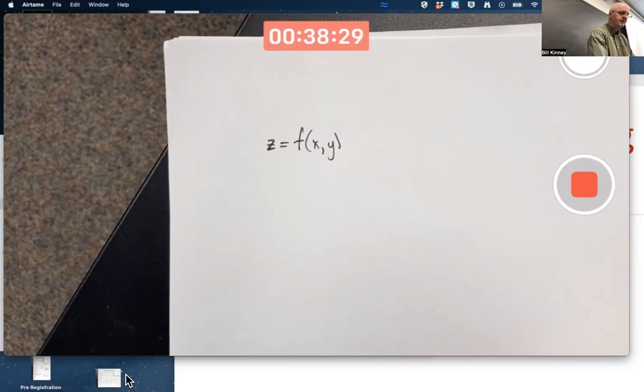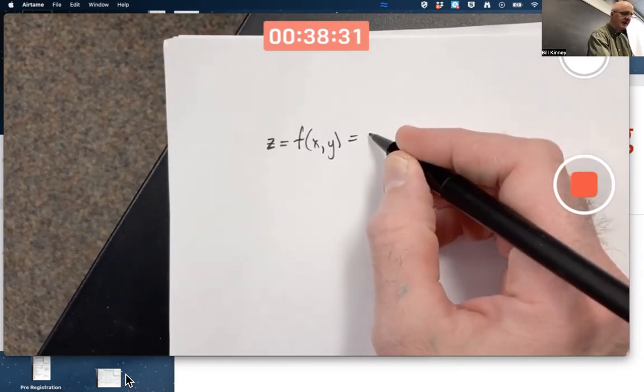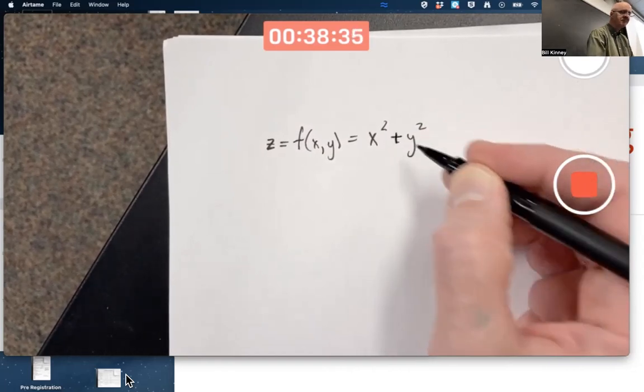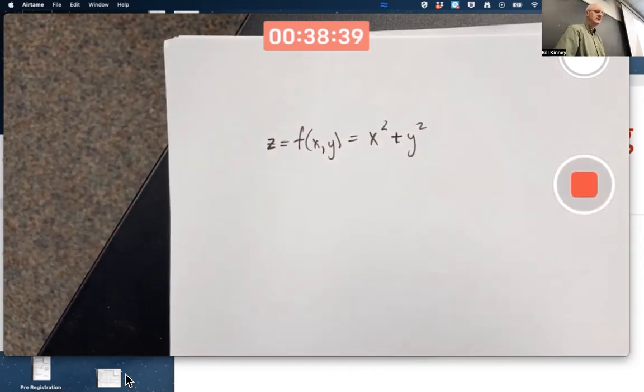What's an example here? How about a simple example, X squared plus Y squared? That's a function, a formula, telling you how to find Z if you know two numbers, X and Y.